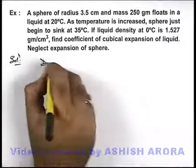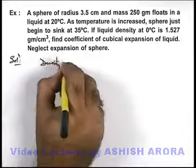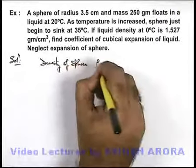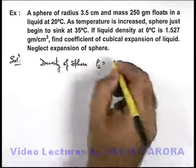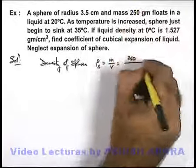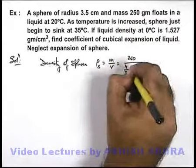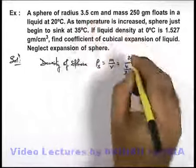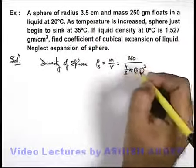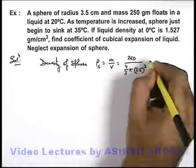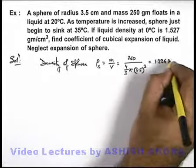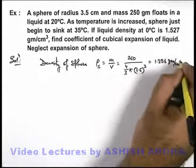We first find out the density of sphere. The density of sphere is equal to mass upon volume. The mass of sphere is 250 gram. Volume is 4 by 3 pi r cube, the radius given is 3.5 cube. If we calculate its numerical value will turn out to be 1.396 gram per centimeter cube.